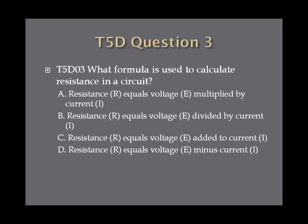Question 3: What formula is used to calculate resistance in a circuit? A. Resistance equals voltage multiplied by current. B. Resistance equals voltage divided by current. C. Resistance equals voltage added to current. Or D. Resistance equals voltage minus current.